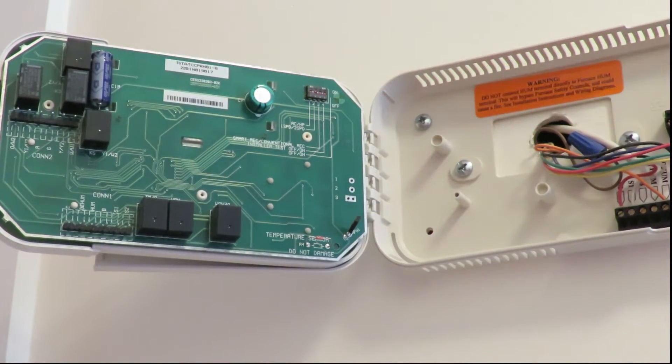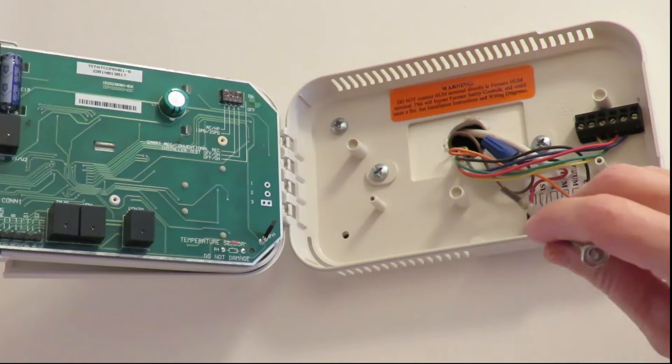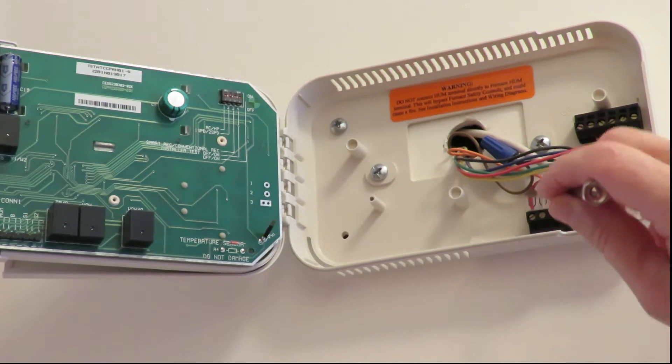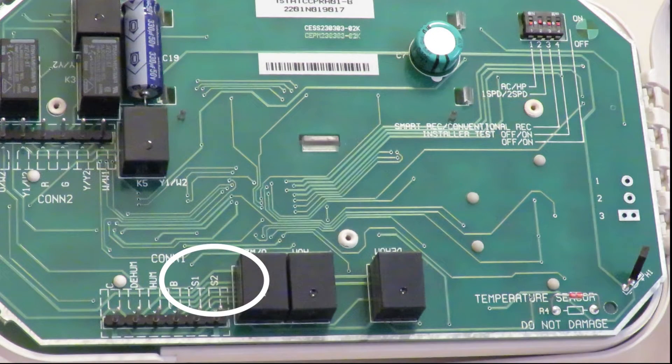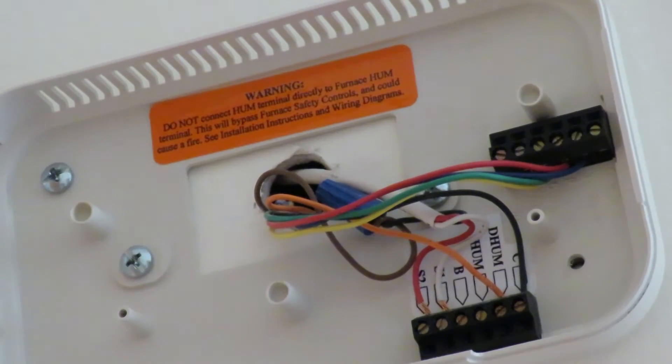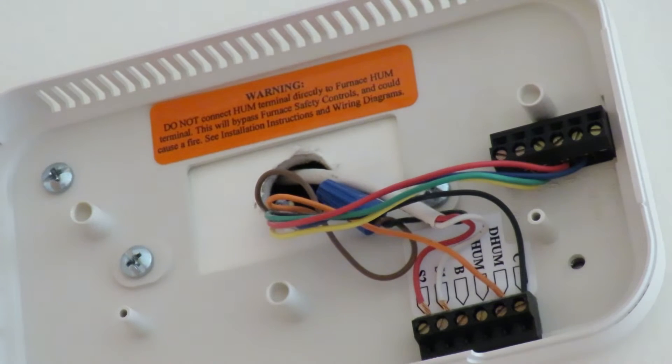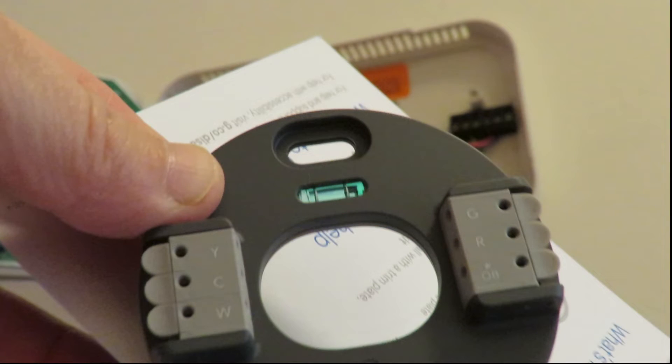But interestingly, these two wires, they say S1 and S2 here. And you can see it on the circuit diagram. Notice that we have 1, 2, 3, 4, 5, 6, 7, 8 wires, whereas we only have 6 pins in the nest.